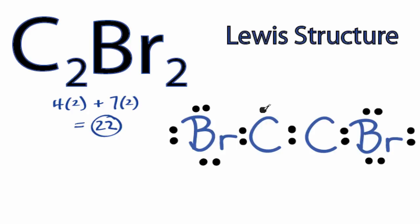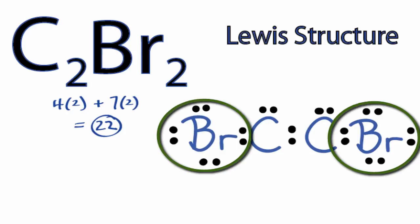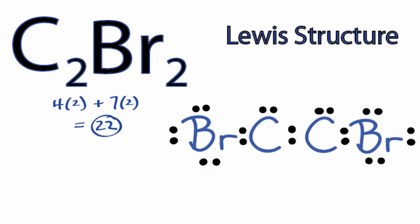Let's go back to the center with the carbons, 20 and then 22. You can see the bromines on the ends, they have eight valence electrons, so their outer shells are full, but the carbons in the center, each carbon only has six valence electrons.